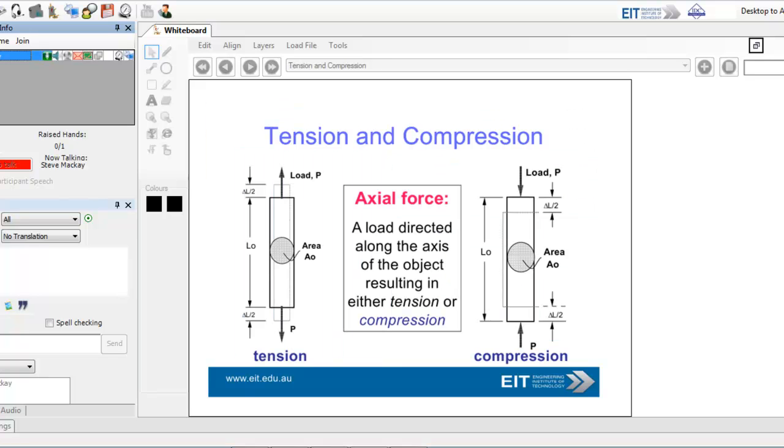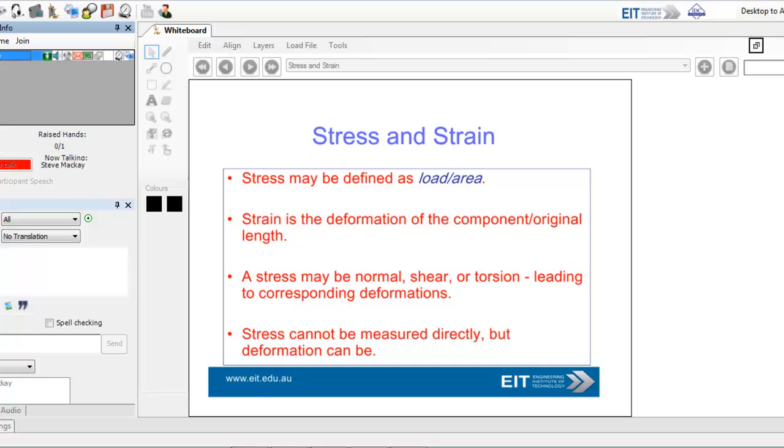First for materials, the good old chestnuts of tension and compression. Tension is forces in opposite directions, and you could get the material breaking as a result. The smaller the area for a particular load, the greater the stress. The greater the load for a particular fixed area, the stress goes up as well.